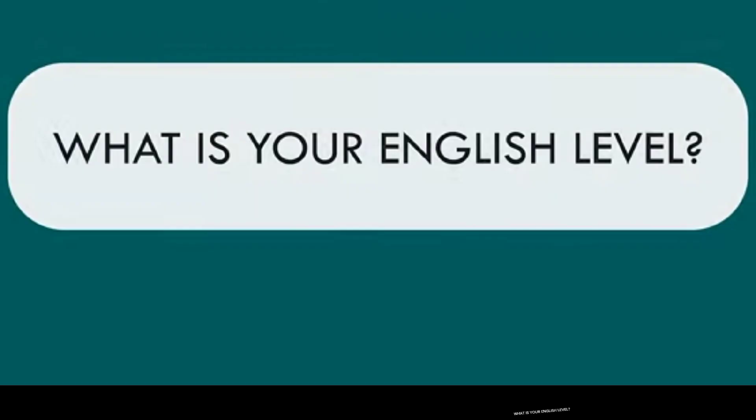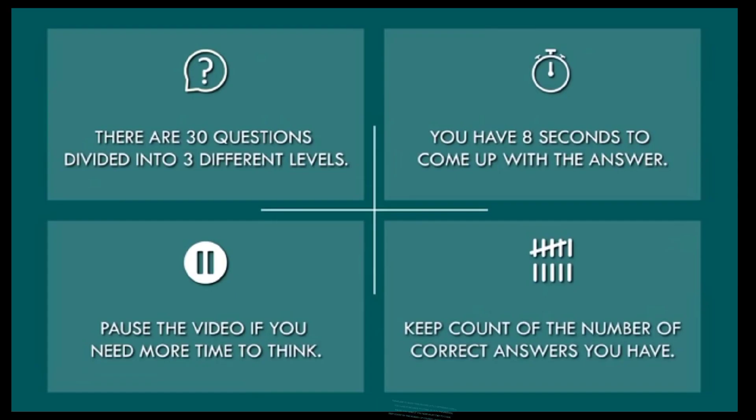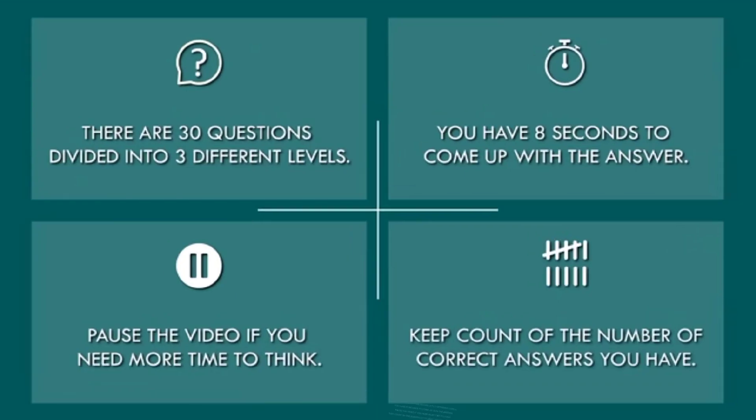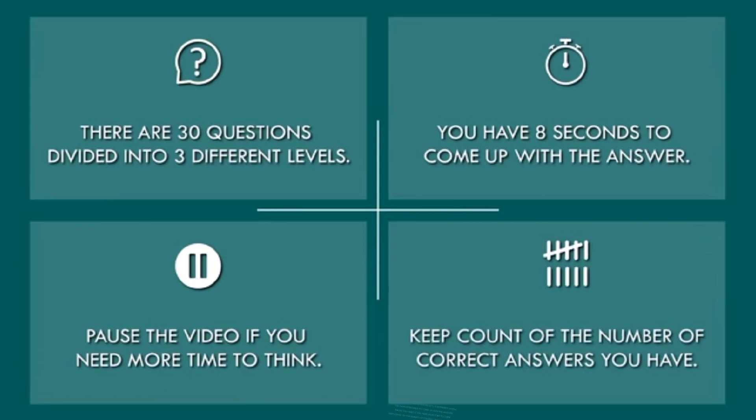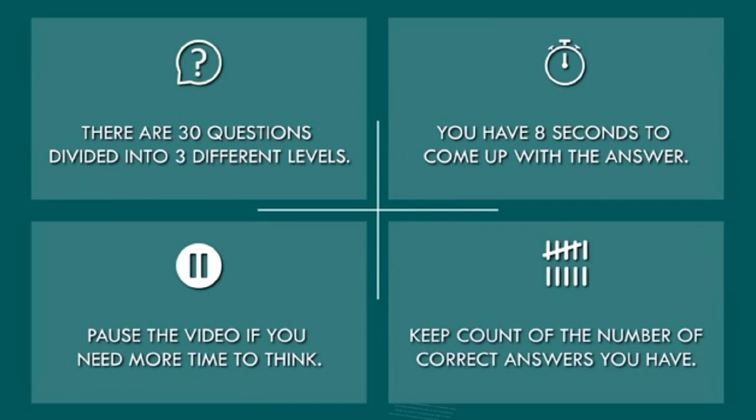What is your English level? There are 30 questions divided into 3 different levels. You have 8 seconds to come up with the answer. Pause the video if you need more time to think. Keep count of the number of correct answers you have.